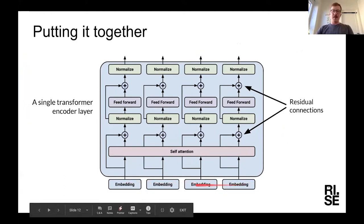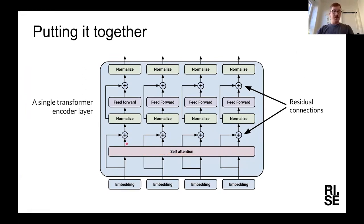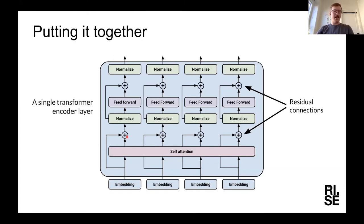Putting these two parts together gives you a transformer layer. The embeddings are at the bottom — the tokens or parts of words — which are fed into an attention layer where they all interact: the full sequence interacts with each other and you get out another embedding that is the weighted sum. Transformers also use residual connections: taking the original embedding vector and adding it together with the output of the attention. Then you normalize — keeping the vectors small — put it into the feedforward network, undo the residual connection by adding the vector from before to the output from the feedforward network, and normalize. This is a single transformer layer.